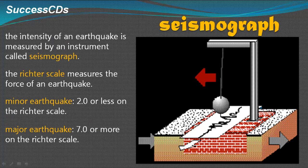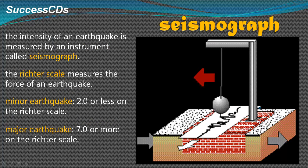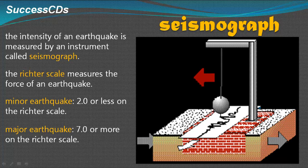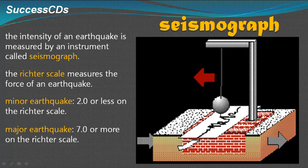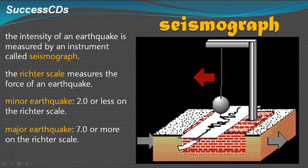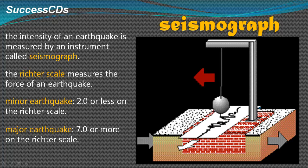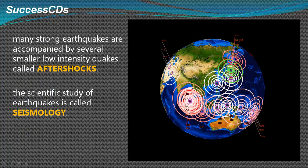The intensity of an earthquake is measured by an instrument called a seismograph. The Richter scale measures the force of an earthquake. If the reading is 2 or less on the Richter scale, it's called a minor earthquake. If the reading is 7 or more, it's called a major earthquake. Many strong earthquakes are accompanied by several smaller, low-intensity quakes called aftershocks.